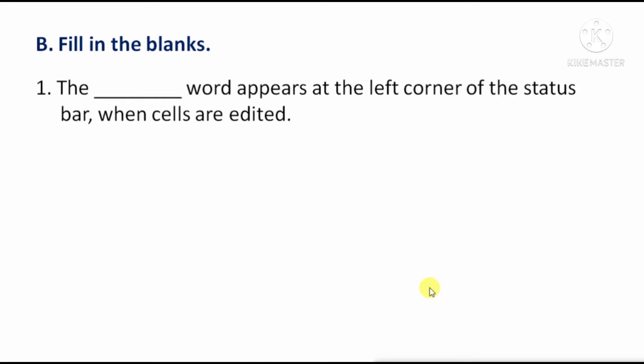Fill in the blanks. First question: The word that appears at the left corner of the status bar when cells are edited — the answer is 'Enter'. When we are editing cells in Excel, the word shown at the left corner of the status bar is 'Enter'.